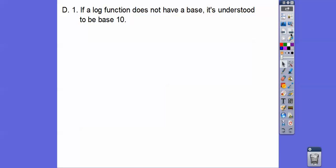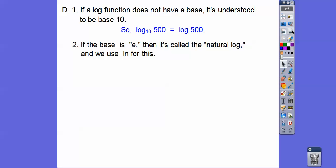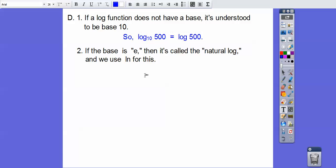If a log function does not have a base, it's understood to be base 10, so for example, log base 10 of 500, we can just write it as log of 500. And then similarly, if the base is e, then it's called the natural log, and so we use ln. A lot of calculators actually have this in their calculator, they actually have ln, and it's right next to your log button. So it might be ln or ln, so look for that on your calculator right there.